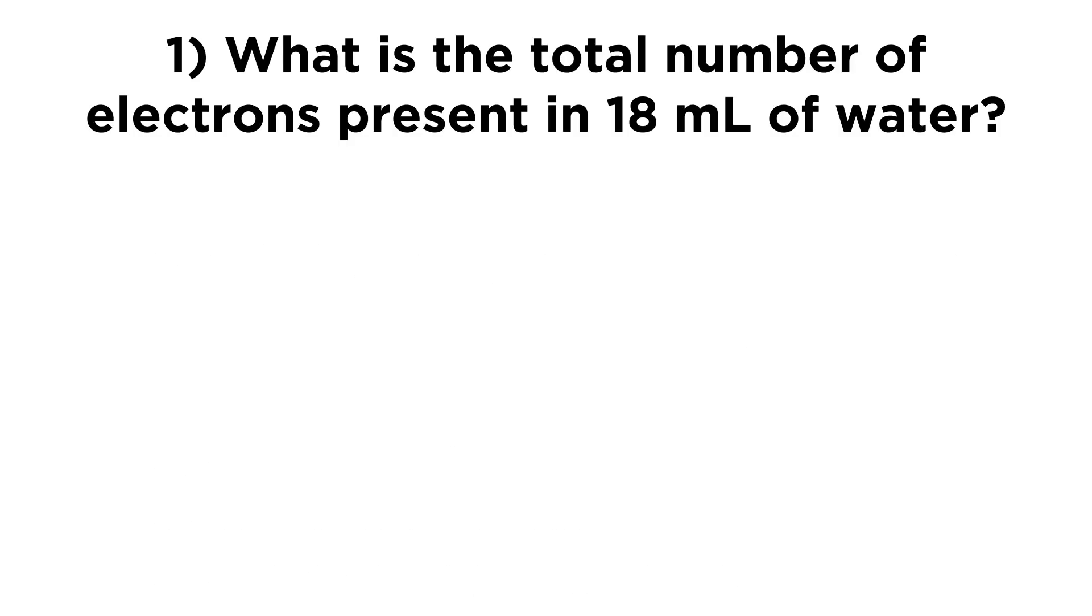So for this first question, we want to know the number of electrons that are present in this volume of water. And so we're definitely going to need to do some conversions. And we really have just one piece of information to work with. So let's just go ahead and put 18 milliliters of water right here. We know we're going to do some conversions with that value.